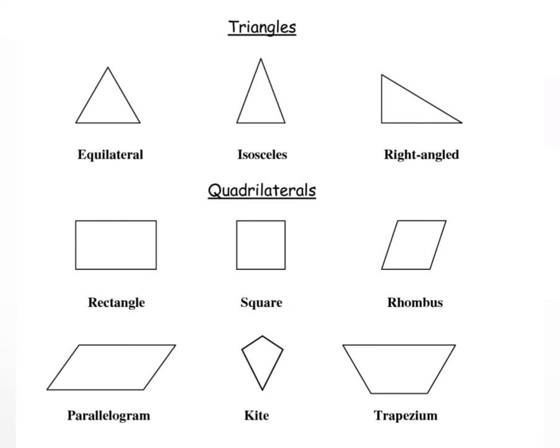Let us learn few names of the polygons. The shape with three sides we call it as triangles. And the shape which has four sides we call it as quadrilateral. We can see few more examples of quadrilaterals here.